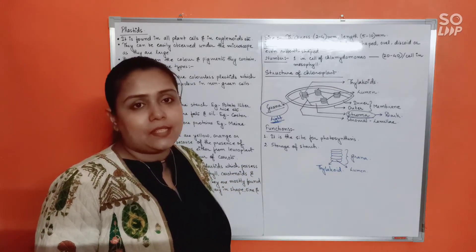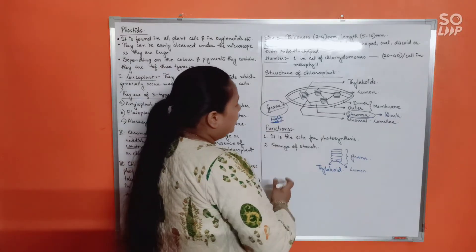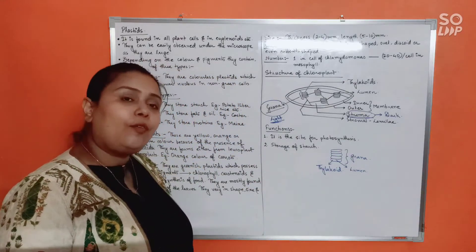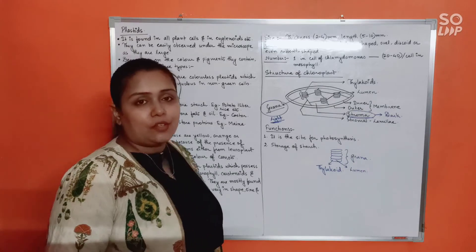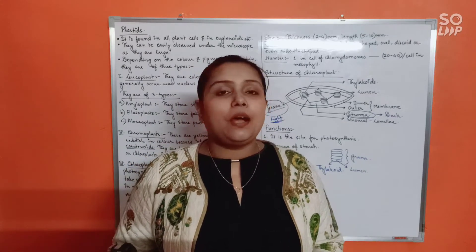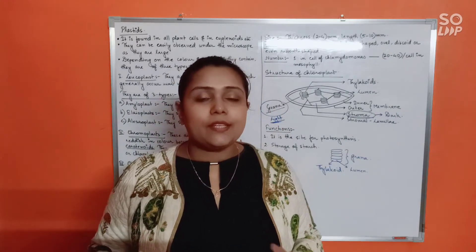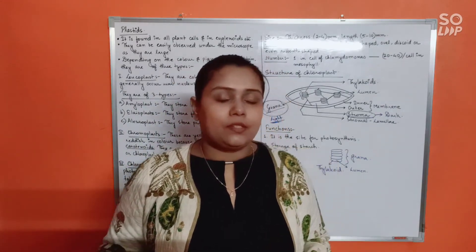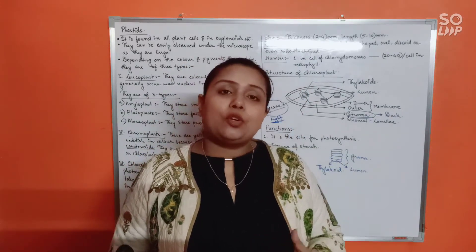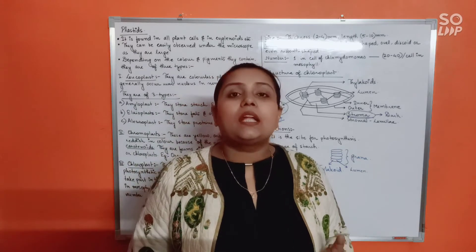The main function of chloroplast is that it is the major site of photosynthesis, and it also stores starch. Now, something very important and interesting regarding both mitochondria and plastids - there is a hypothesis that includes both these cell organelles.